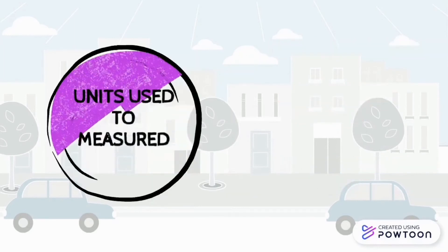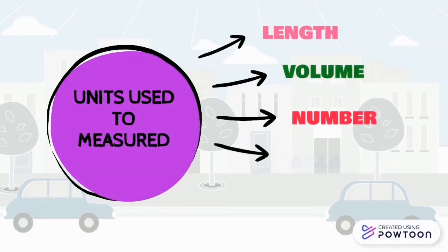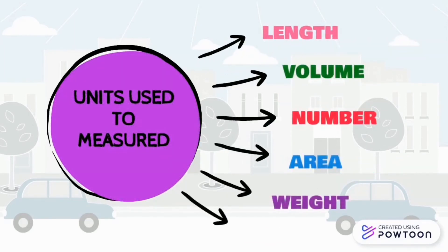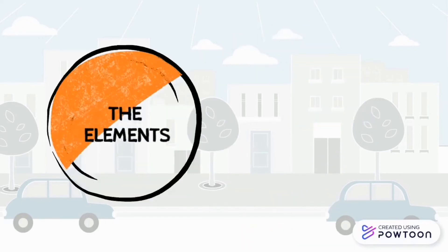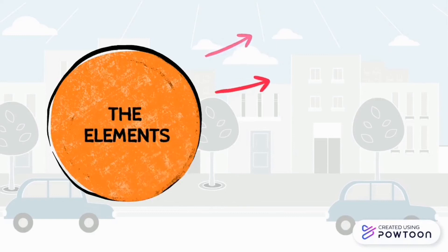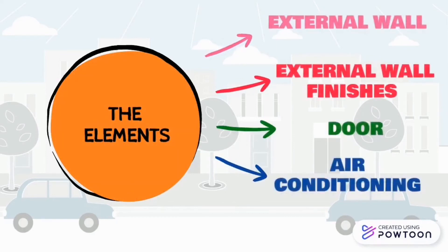The units used to measure in BOQ are length, volume, number, area, weight, and time. The elements to be discussed are external wall, external wall finishes, door, and air conditioning.